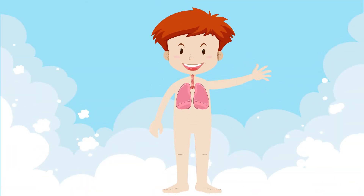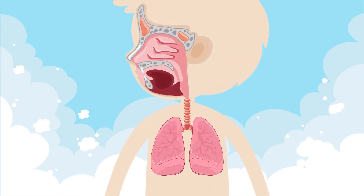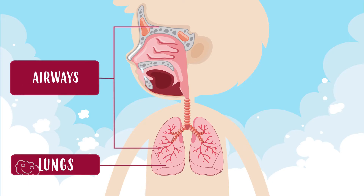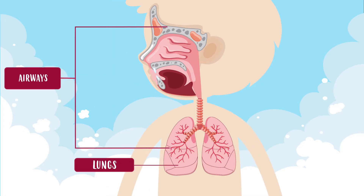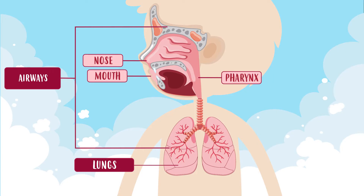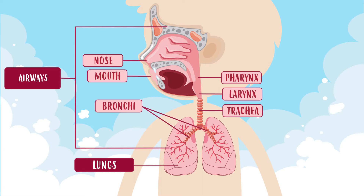The respiratory system is responsible for breathing, and for that it uses the lungs and the airways, which are the parts that compose it. The airways are tubes through which the air passes until it reaches the lungs, and they are made up of the nose and mouth, the pharynx, the larynx, the trachea, the bronchi, the bronchioles, and the alveoli.